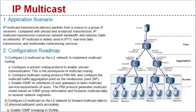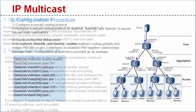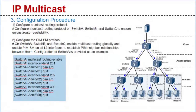After you finish the complete configuration procedure, multicast data can be sent from the source to receivers that require the data. Now I will show you the procedure for configuring IP multicasts on this network. Step 1: configure a unicast routing protocol on switches A, B, and C to ensure unicast route reachability.